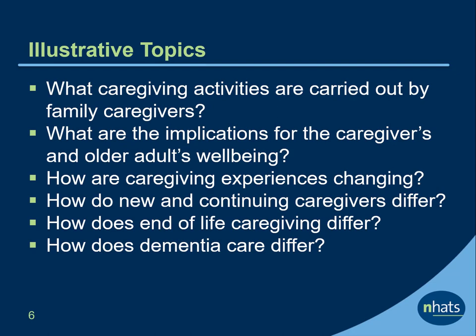Researchers can use NSOC to address a variety of topics such as: What caregiving activities are carried out by family and unpaid caregivers? What are the implications of providing care for the caregivers and the older adults' well-being? How are caregiving experiences changing over time? How do new and continuing caregivers differ? How does end-of-life caregiving differ from care earlier in the disablement process? How does dementia care differ from care provided for other reasons?